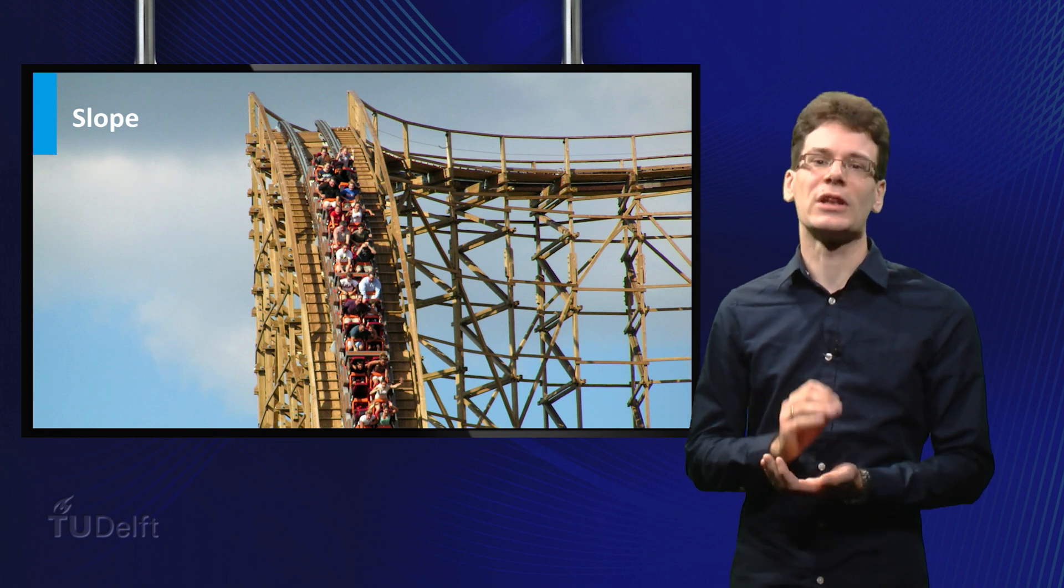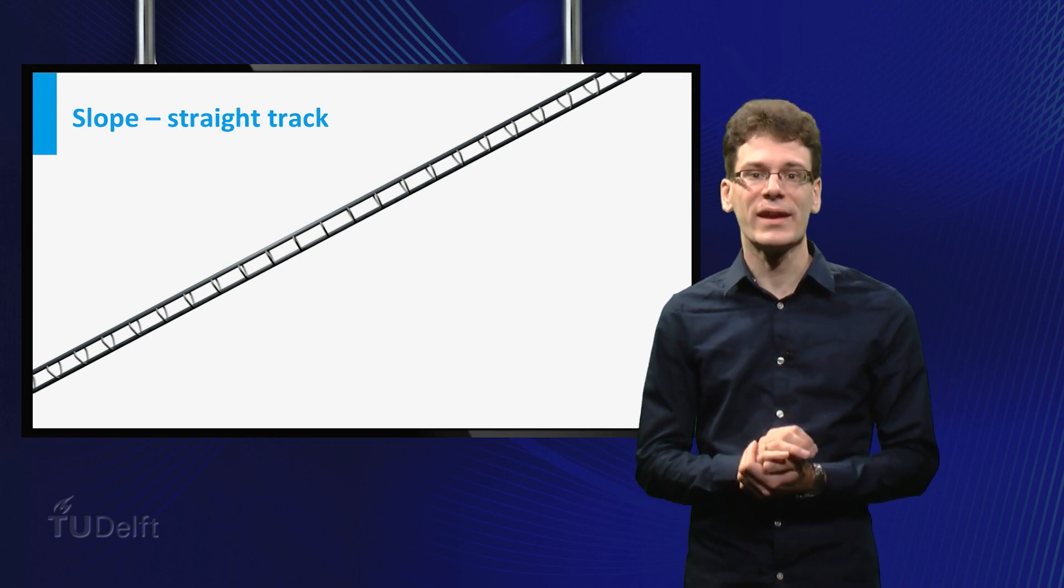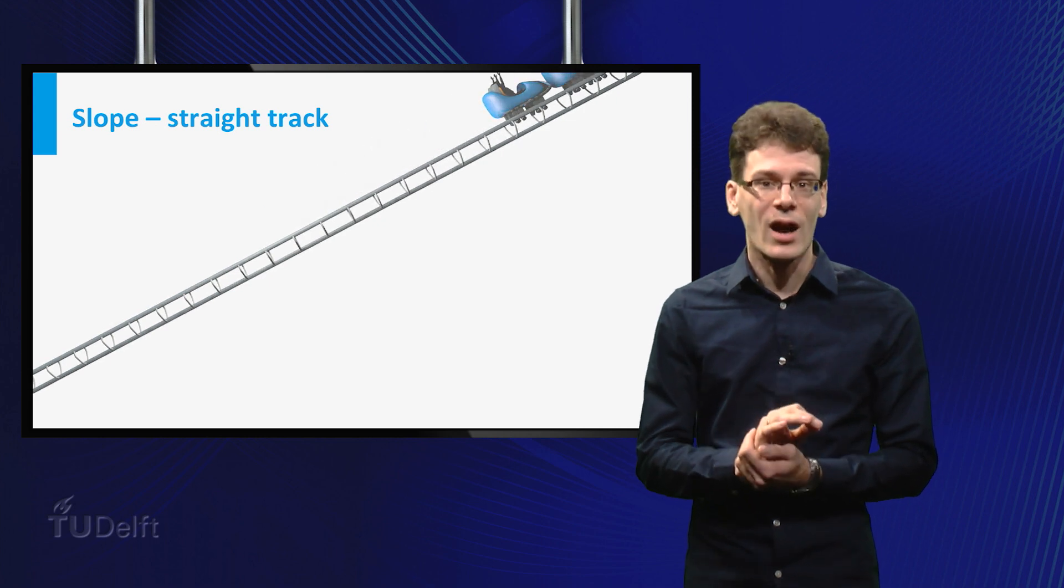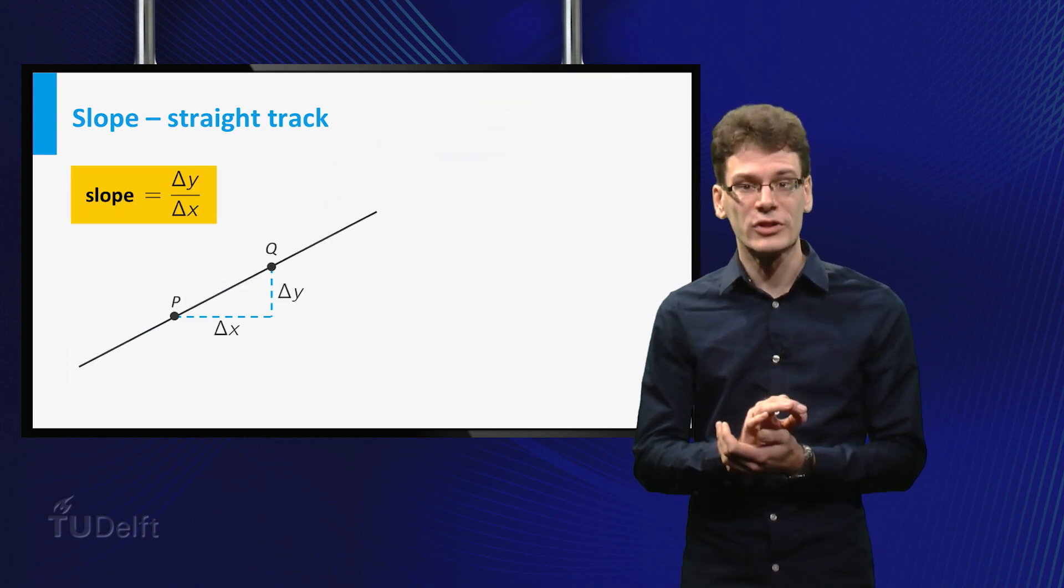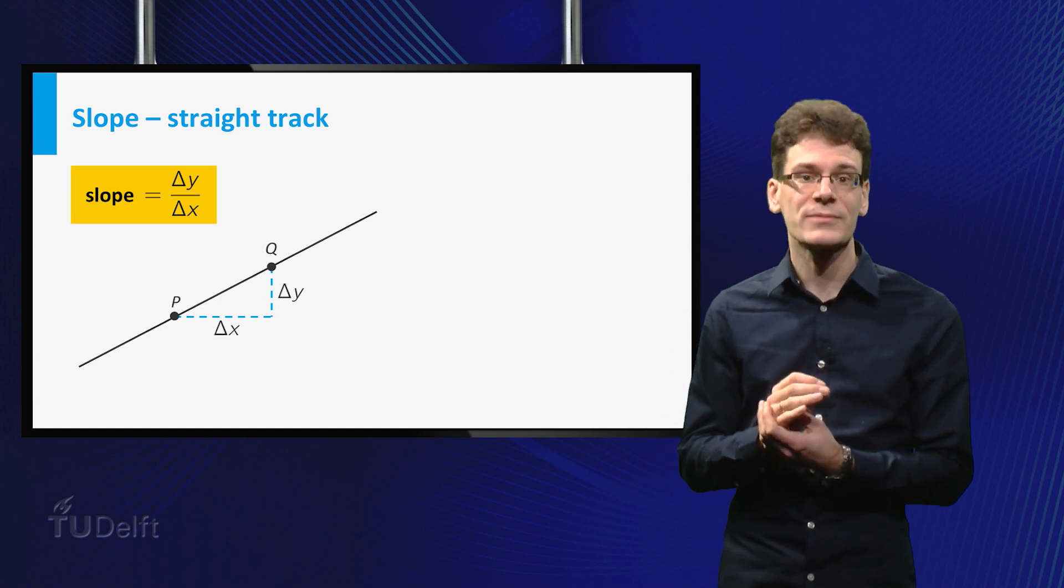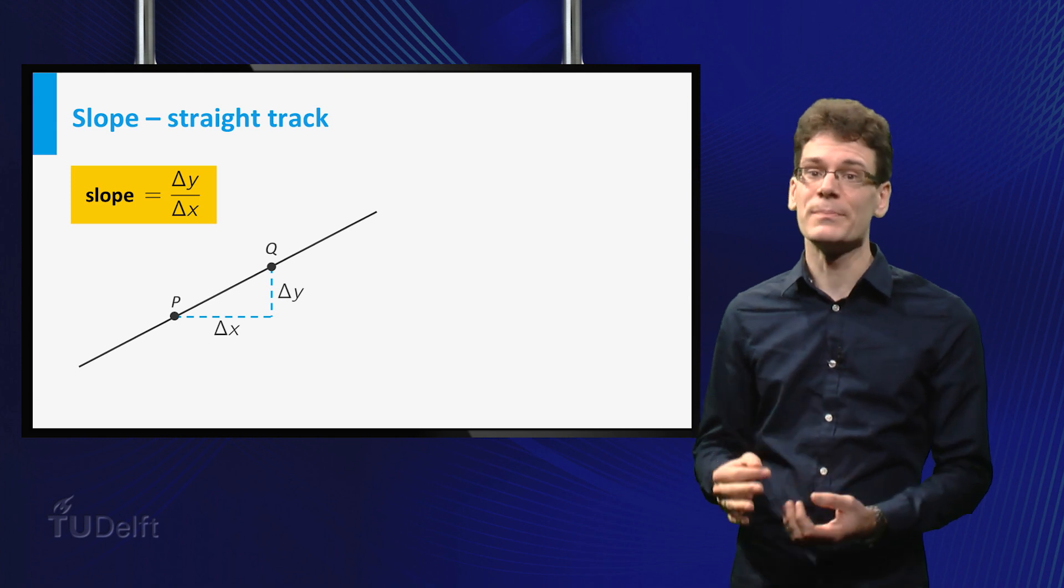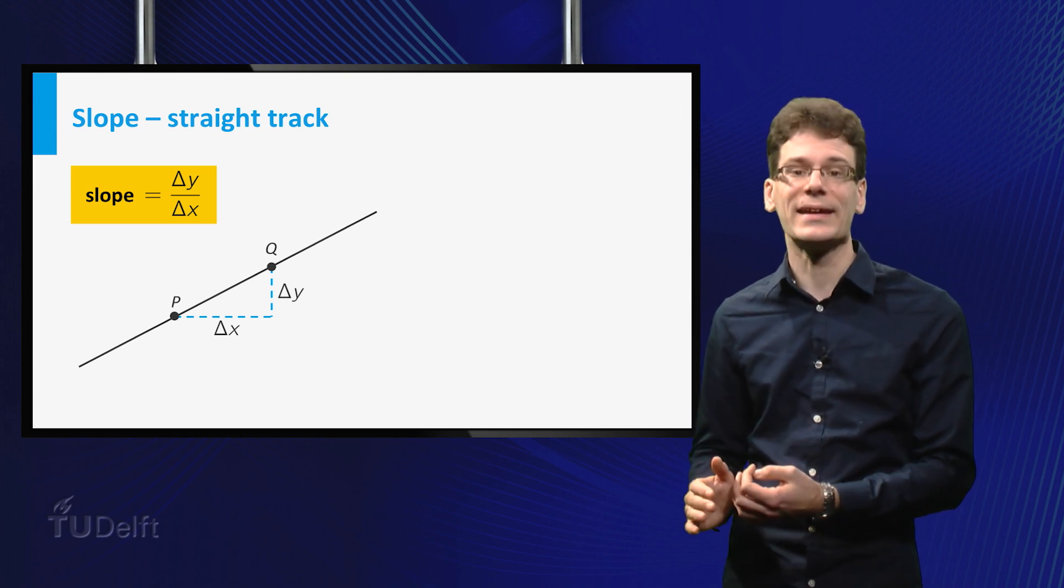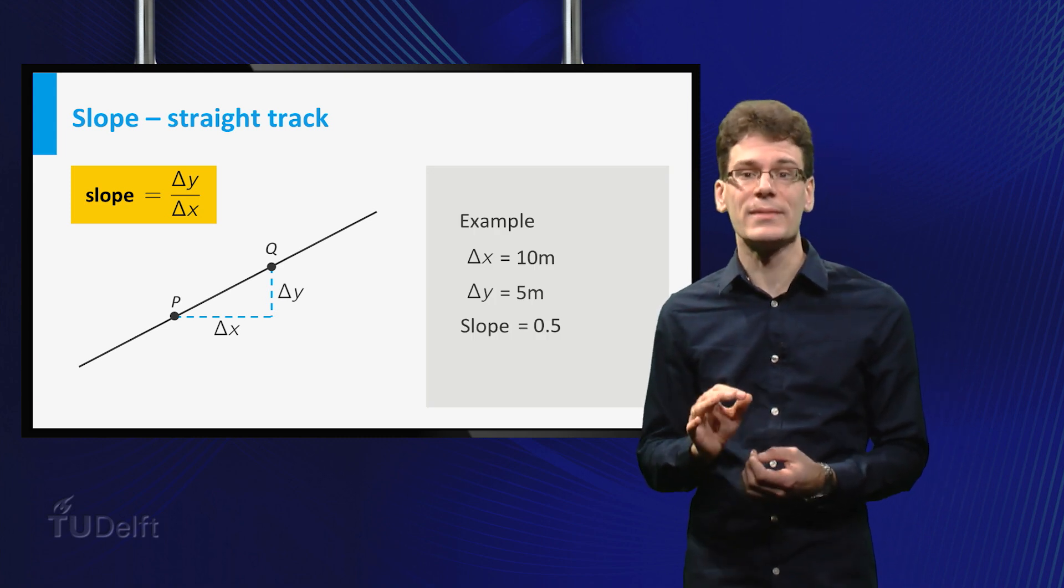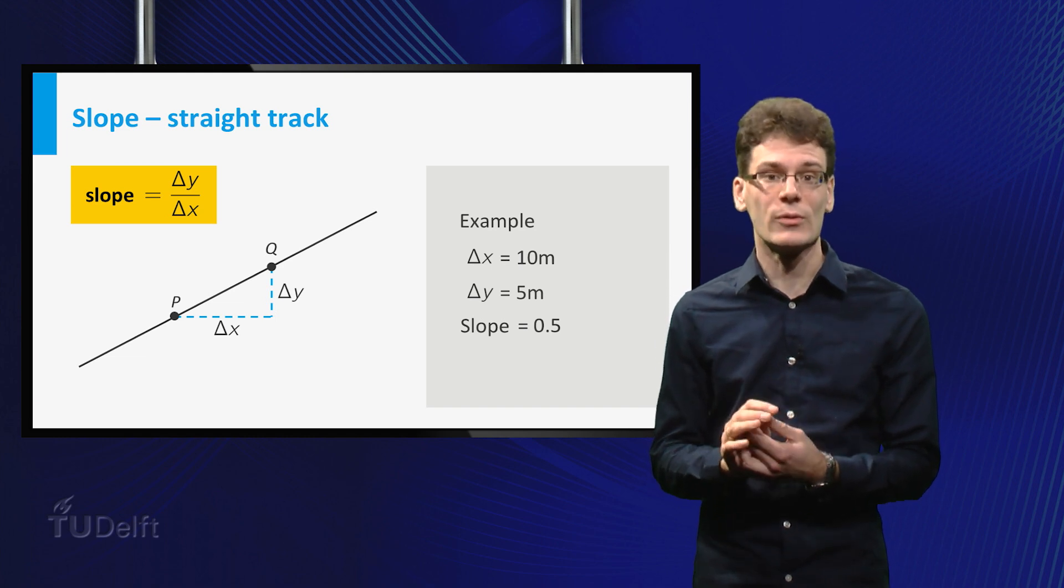Let's start with the concept of slope. How is it defined? First we look at the straight but inclined part of the rollercoaster track. When a kart moves from point P to point Q, there is a corresponding horizontal displacement delta x and a vertical displacement delta y. The slope is simply defined as delta y divided by delta x. For example, if delta x equals 10 meter and delta y equals 5 meter, the slope is 0.5.